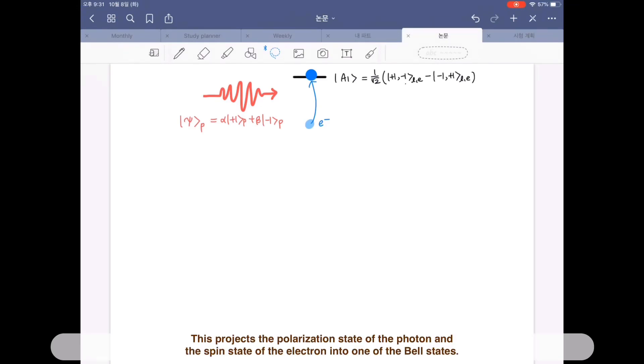This projects the polarization state of the photon and the spin state of the electron into one of the bell states.